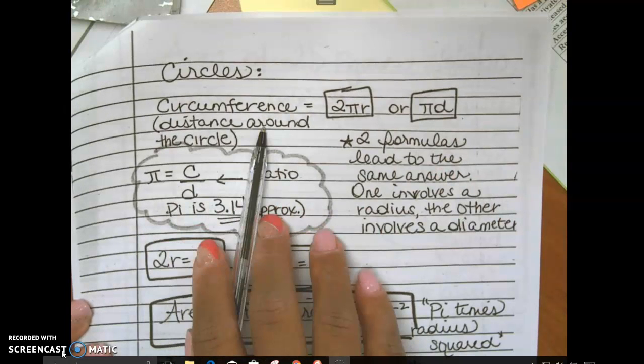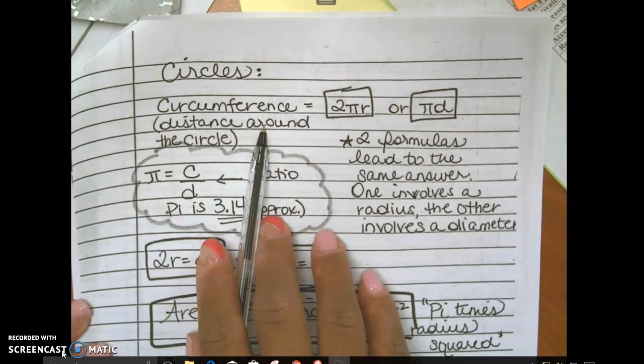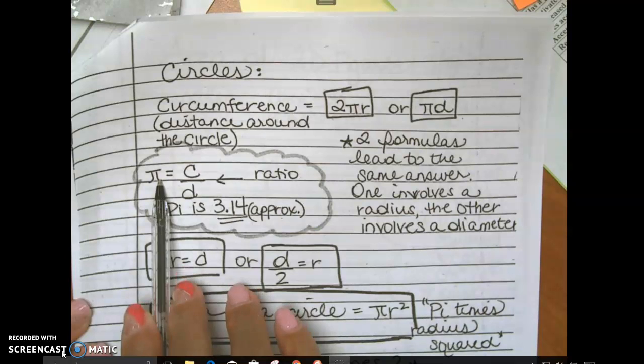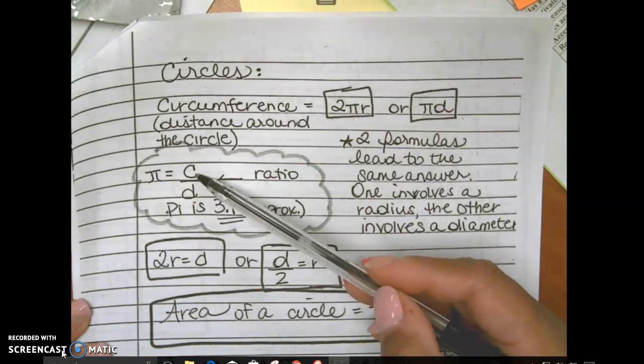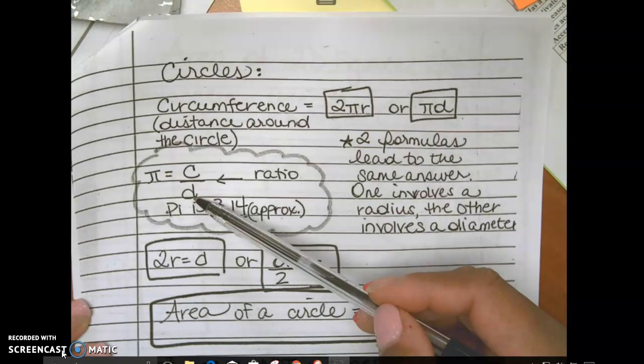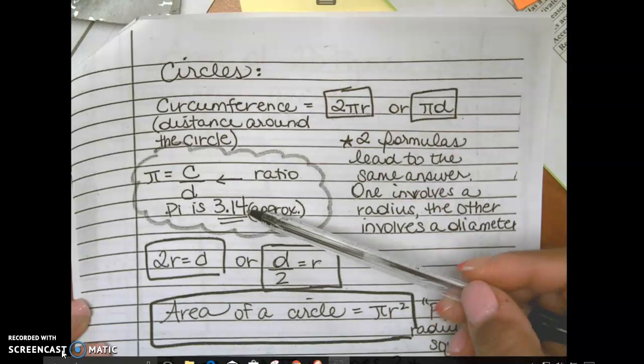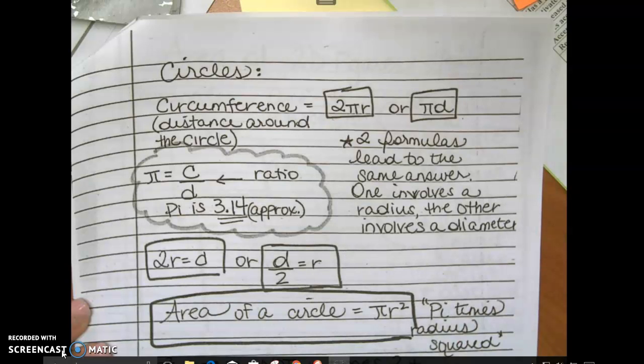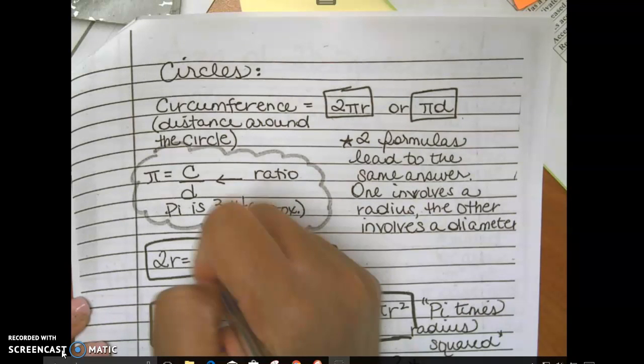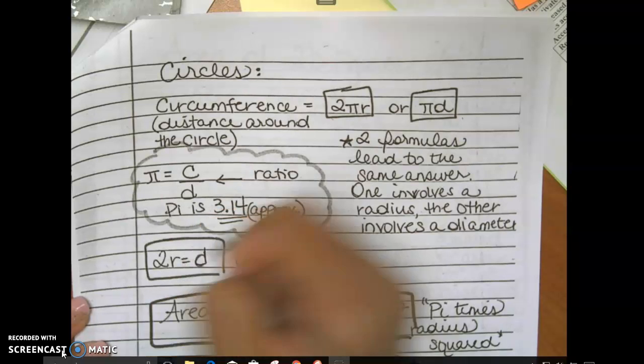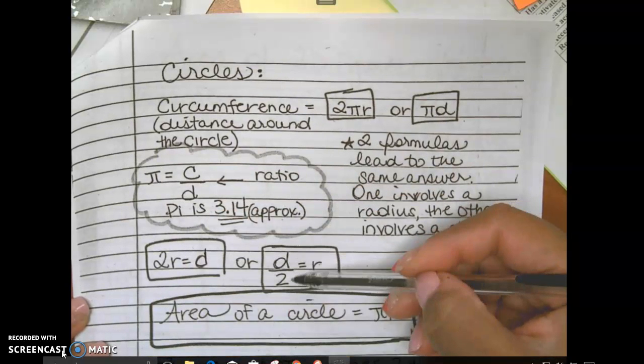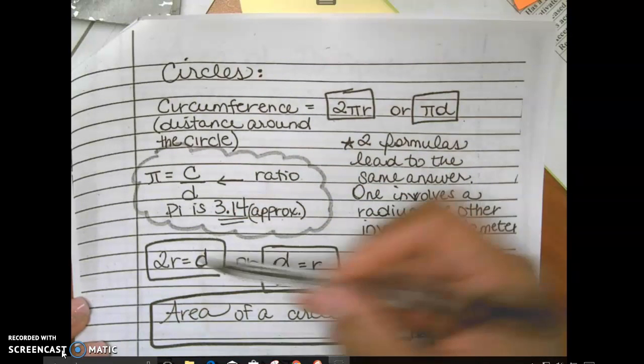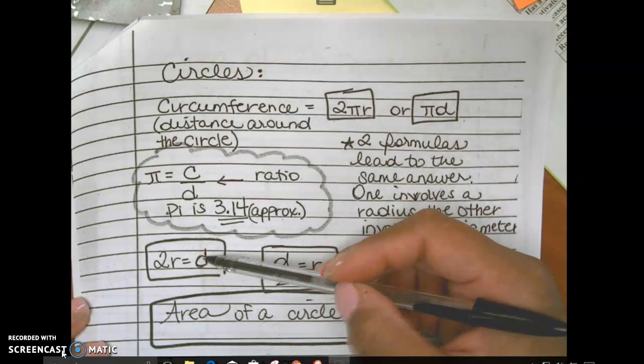Circumference is the distance around a circle. Pi is the ratio of a circumference to a circle's diameter. We represent it numerically as approximately 3.14. It is an infinite, non-repeating decimal. If we're given a diameter, then we cut it in half to get radius, or if we're given a radius, we multiply it by 2 to get diameter.